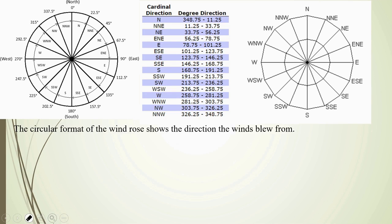This is the circular format of the wind rose that shows the direction of wind blowing from. The direction is represented by degrees, and 16 directions are mentioned here. If I divide 360 by 16, it gives 22.5 degrees per direction.